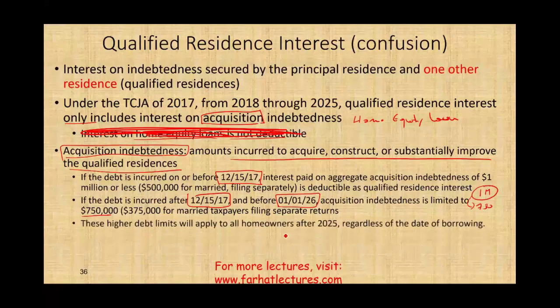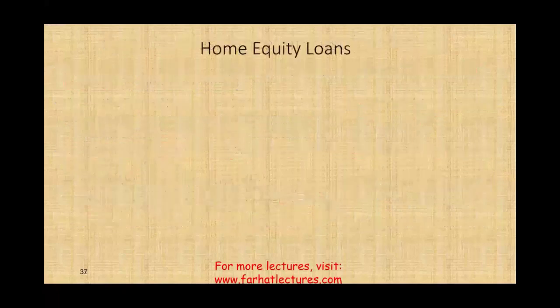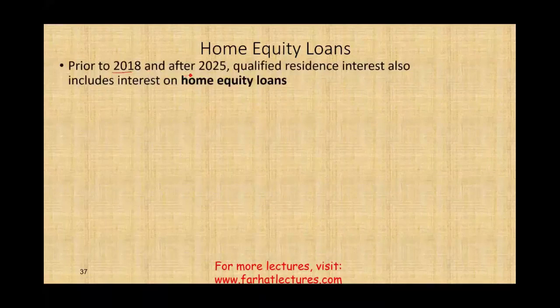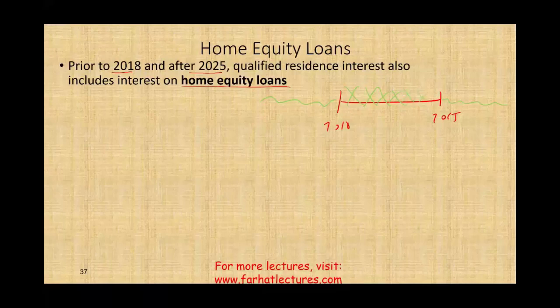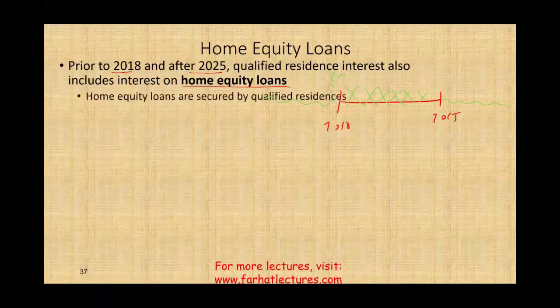These higher debt limits will apply to all homeowners after 2025, regardless of the date of borrowing — so we'll go back after 2025. What they took away is the home equity loan. Home equity loan was deductible prior to 2018 and will be deductible after 2025 — but not from 2018 to 2025. As a personal example: I paid off my home equity loan because I used to be able to deduct the interest. I paid it off in 2018 because that was the last year I could use it.